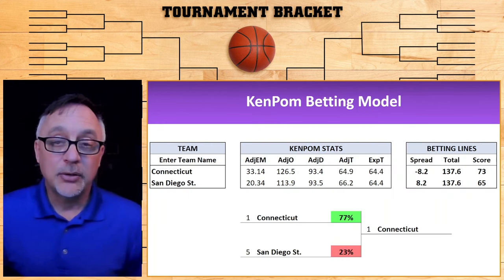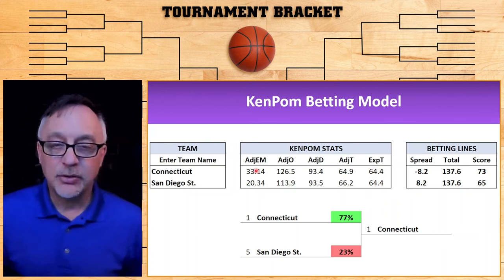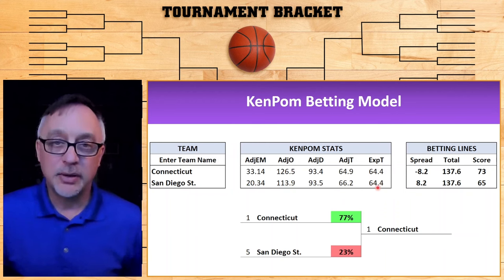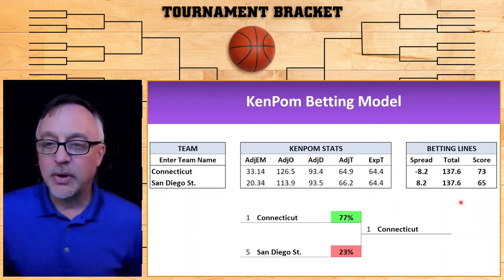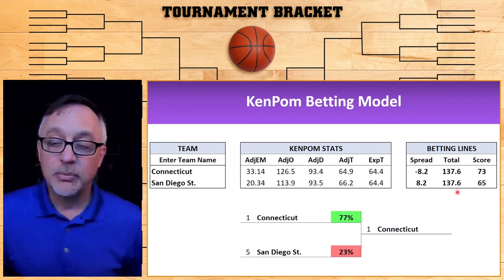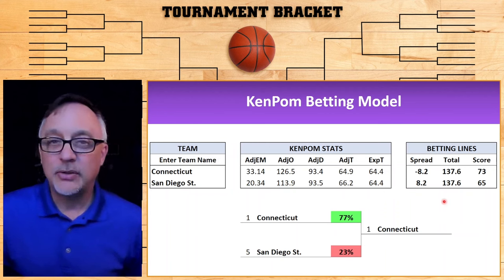Here's a snapshot of the actual model. We'll look at the teams on the far left — we have Connecticut and San Diego State. In the middle here, we have the adjusted efficiency margin, the adjusted offense, adjusted defense, adjusted tempo. Right here we have what's called the expected tempo. On the far right, we have the spread for this game: negative 8.2 for Connecticut as a favorite. The total for the game: 137.6. The actual score for the two teams, and down at the bottom the win probability for both teams. So let's check out the spreadsheet and see how this all works.